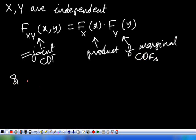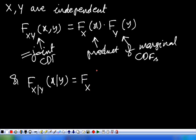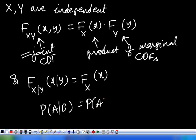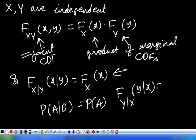Otherwise, what is the other way of defining this? We can write f_{X|Y}(x|y) = f_X(x). This is in the form of the probability of A given B being equivalent to the probability of A. If this condition is satisfied, the two random variables X and Y are said to be independent random variables. Similarly, f_{Y|X}(y|x) should be equivalent to f_Y(y). If either of these conditions is satisfied, then the two random variables X and Y are said to be statistically independent random variables.